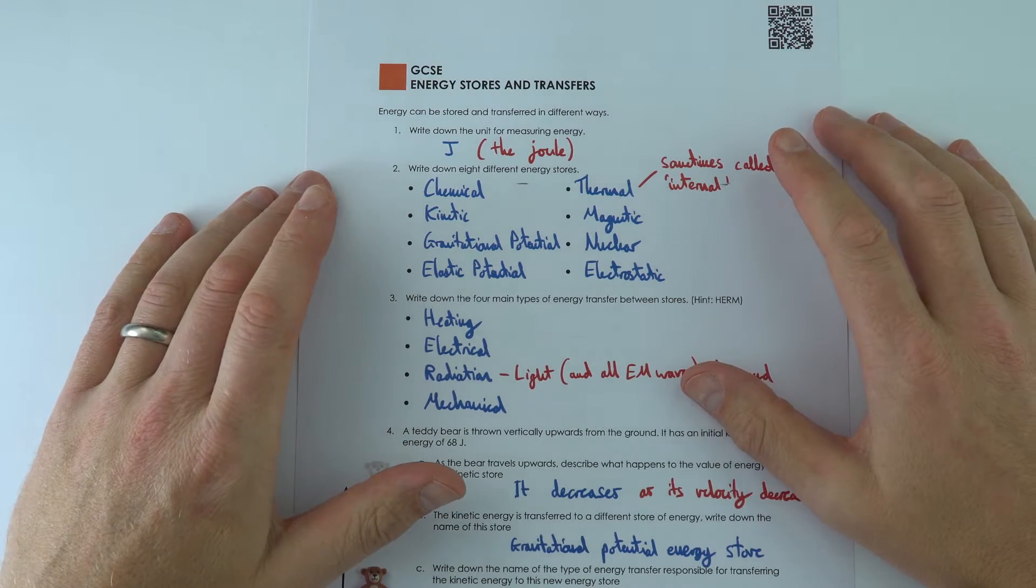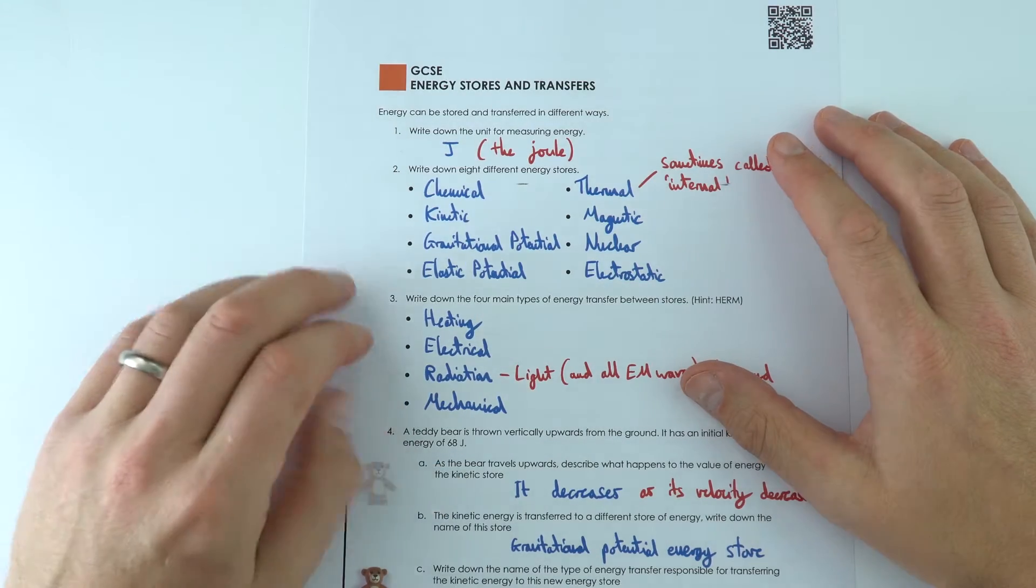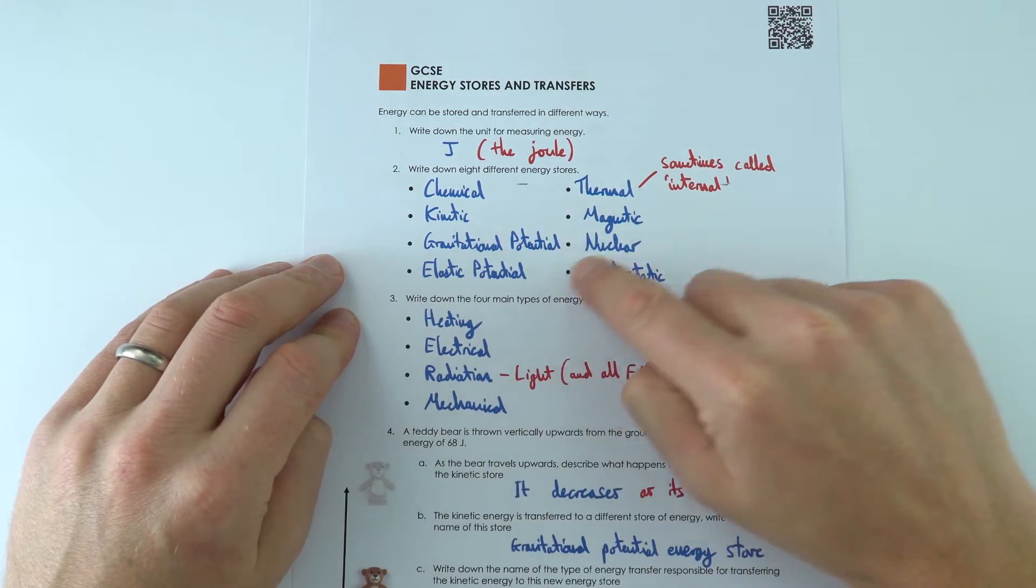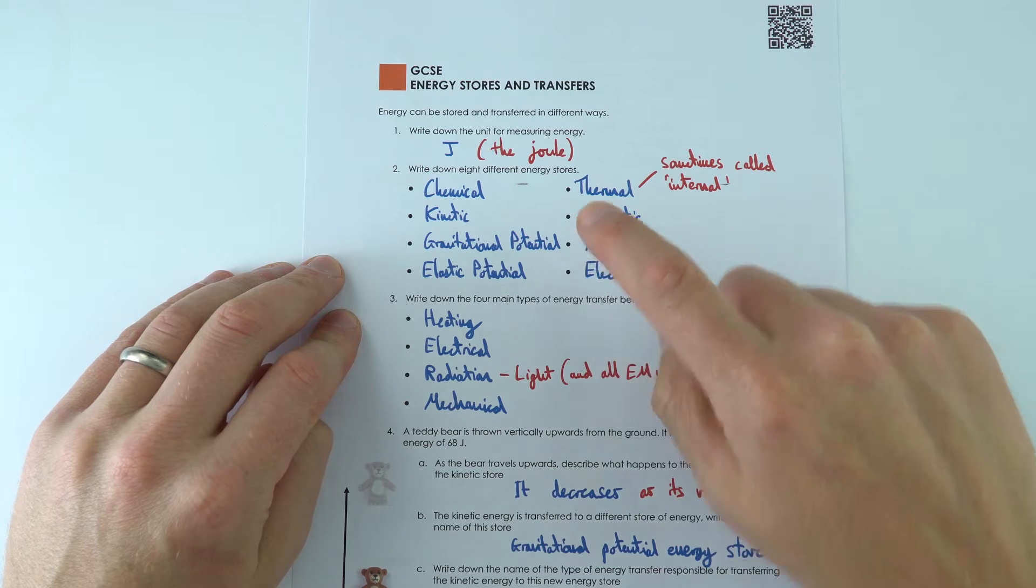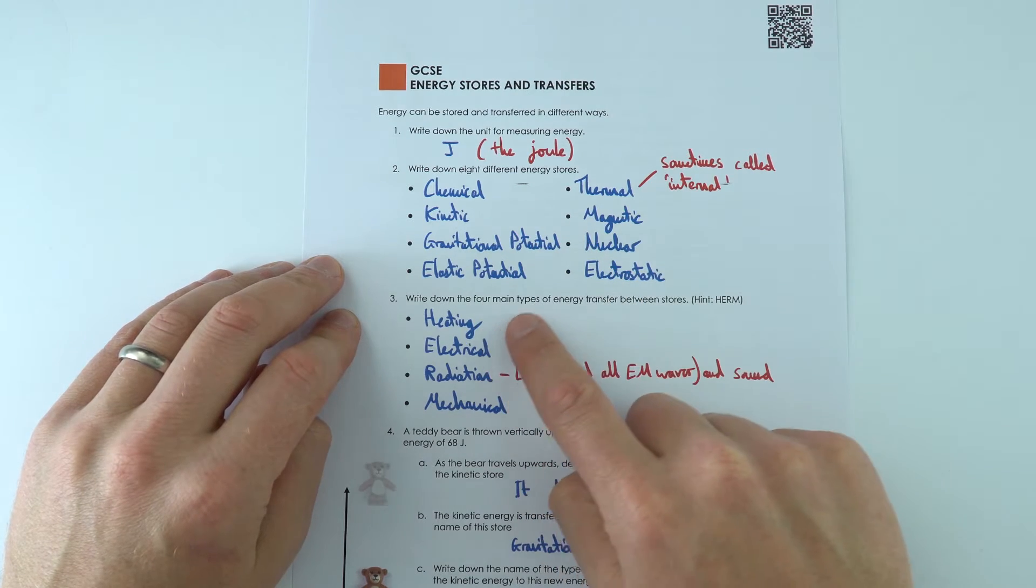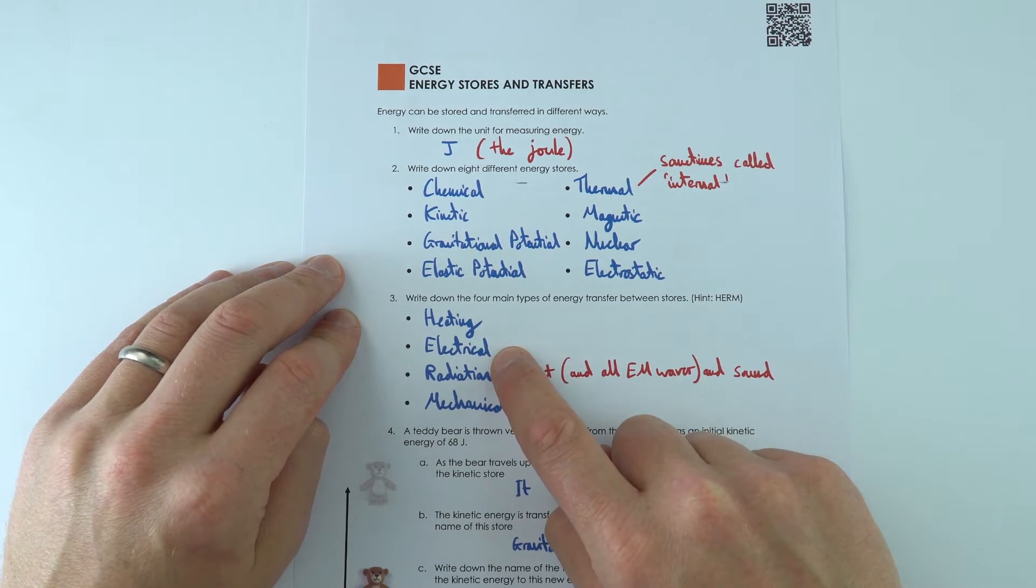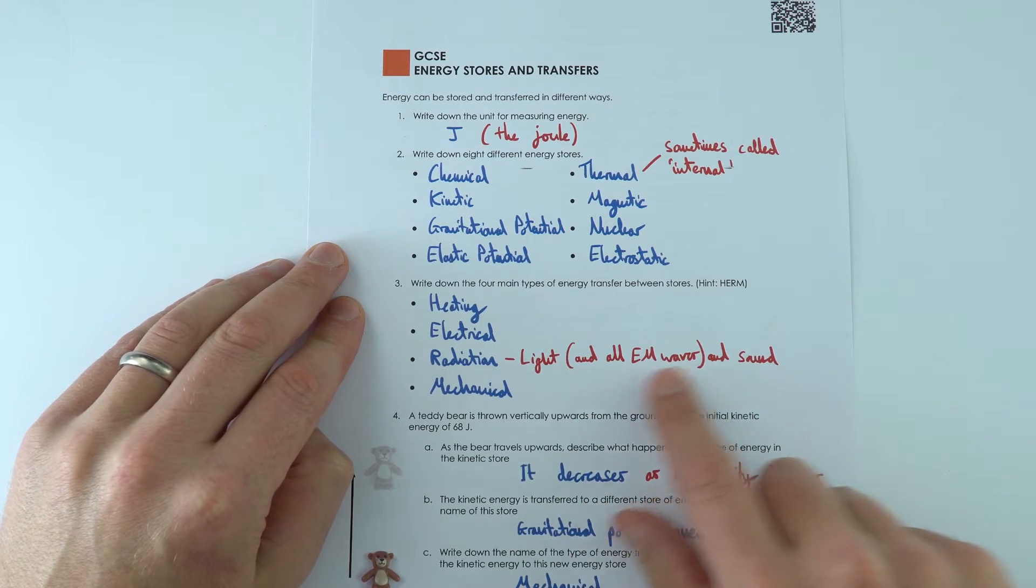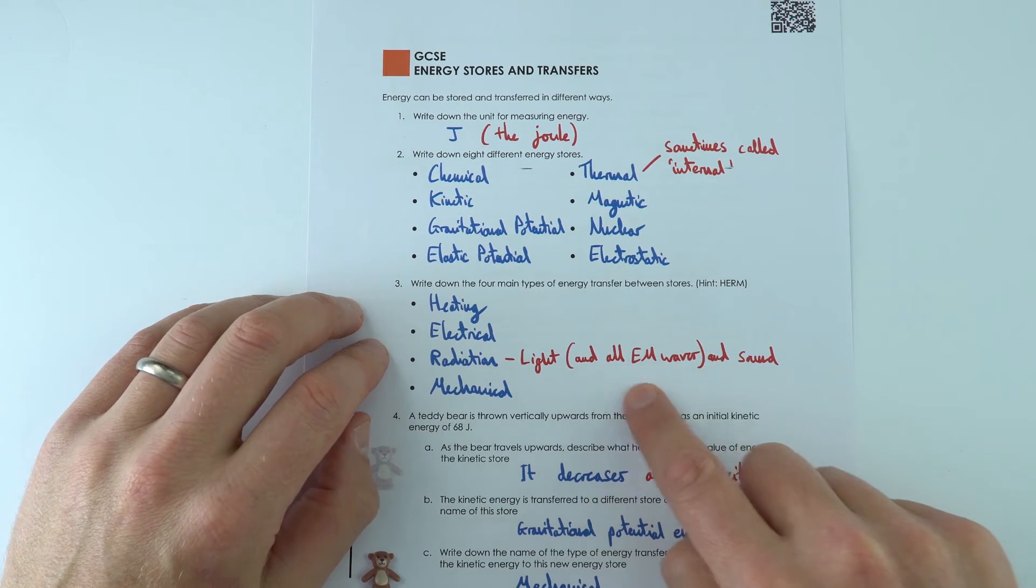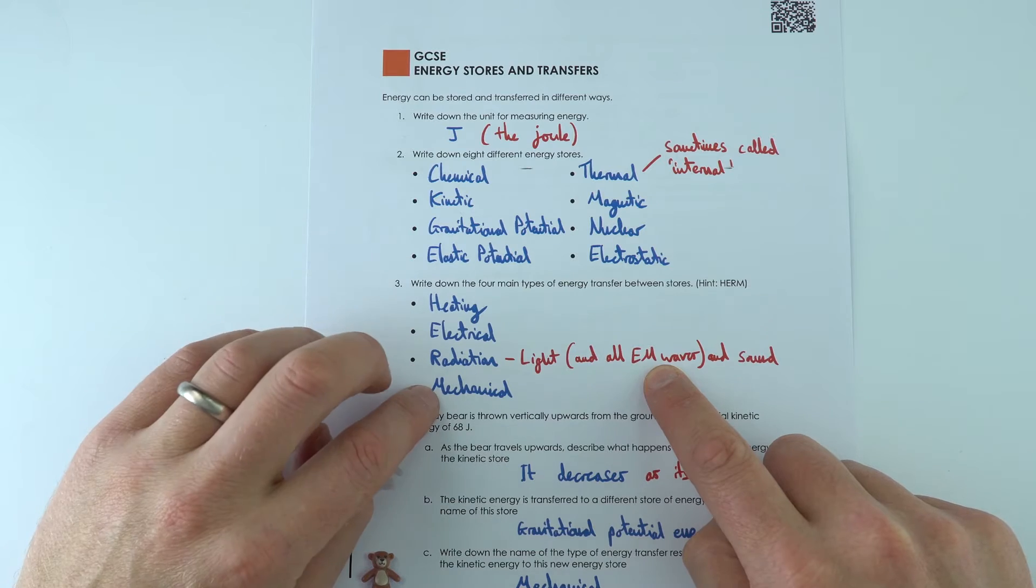So one of the first things you do at GCSE might be looking at energy stores and transfers. These are the eight main ways that energy can be stored and it can be transferred between stores either by heating, electrical, radiation which includes light and sound as well as all sorts of electromagnetic waves, and mechanical as well.